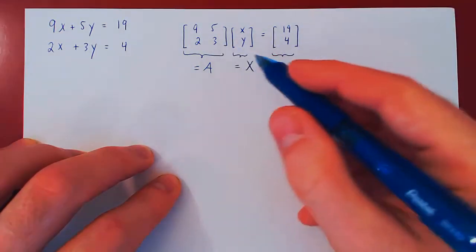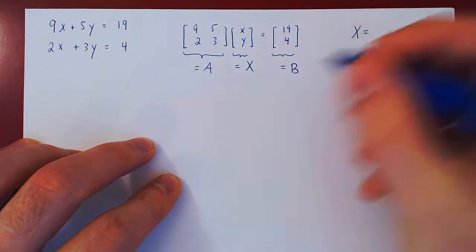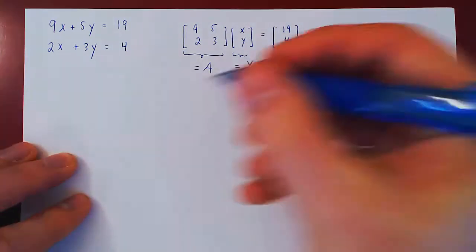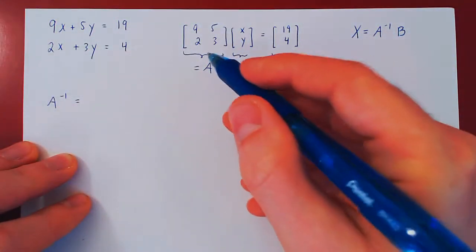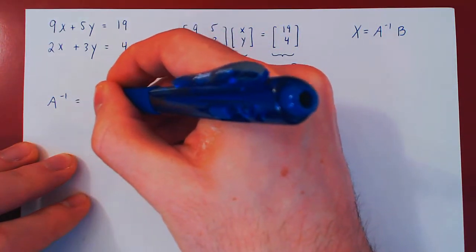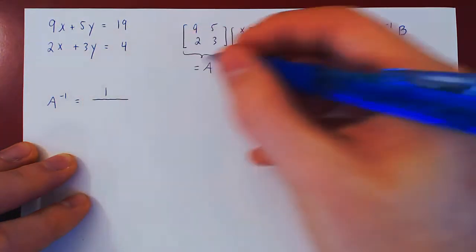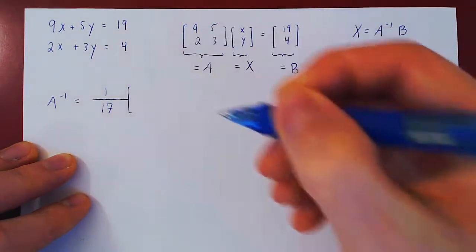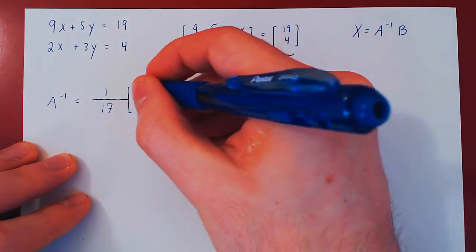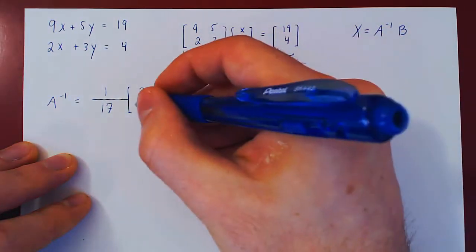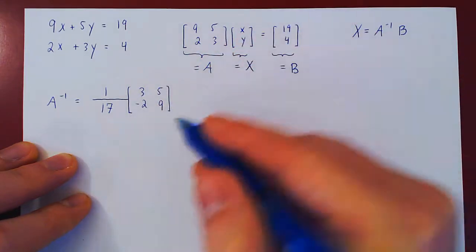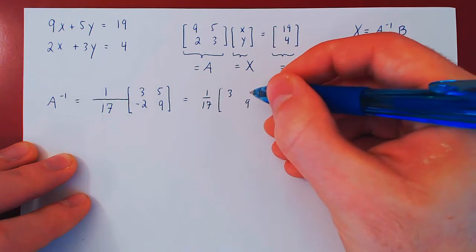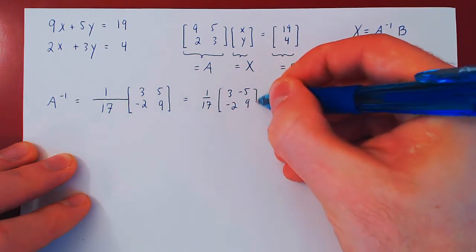We have just shown before that variable X will be A inverse times B. We already have B. Well, we need to find A inverse. As we have a 2 by 2 matrix, we can use the shortcut formula. So 1 over AD minus BC. So 9 times 3, 27, minus 2 times 5, 10. 27 minus 10 is 17. Times, and now we interchange these two entries and we negate the other two entries. And we leave the 1 over 17 up front as a constant multiple. So just 1 over 17.